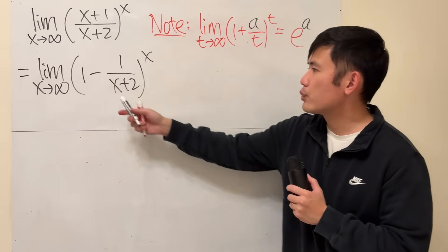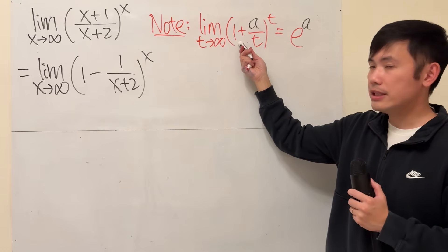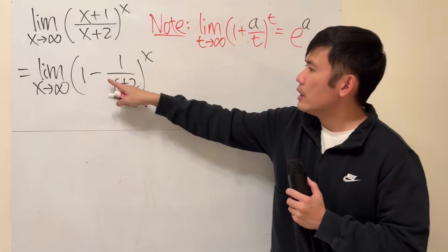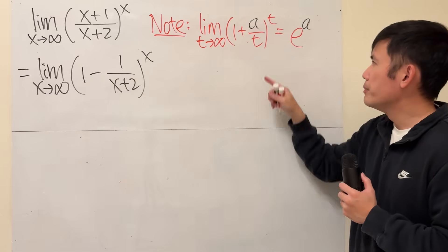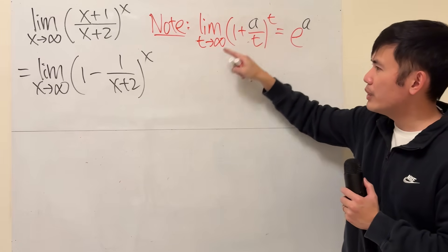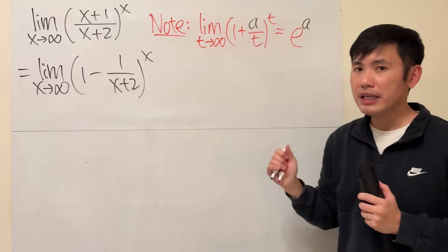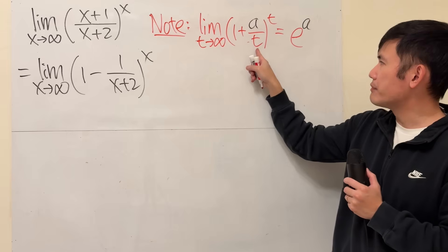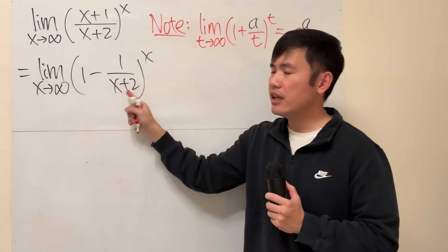Now, we see that we have 1 right here, which matches with this already. And notice that, even though this is a minus, but don't worry, because a could be negative. Right now, a looks like we have negative 1. Alright, so far so good. But the thing is that we have t, and this is x plus 2.